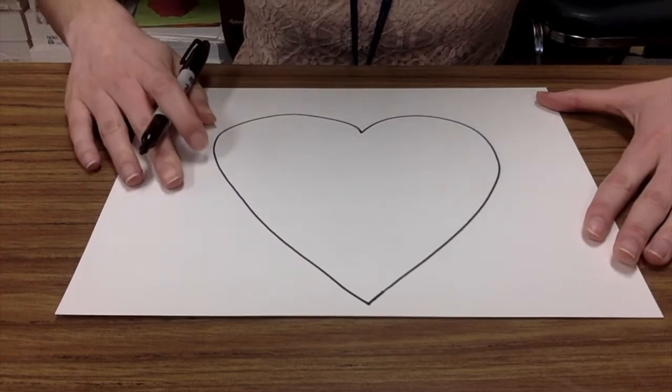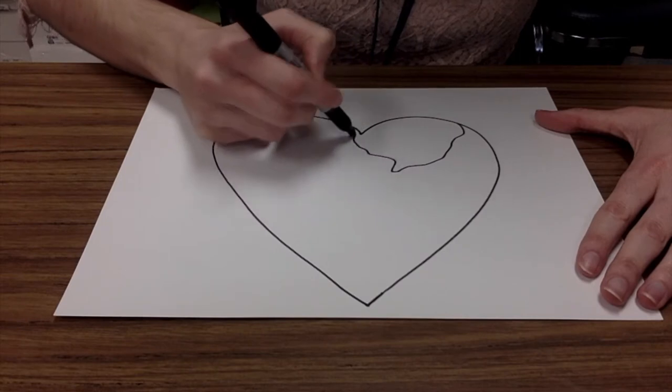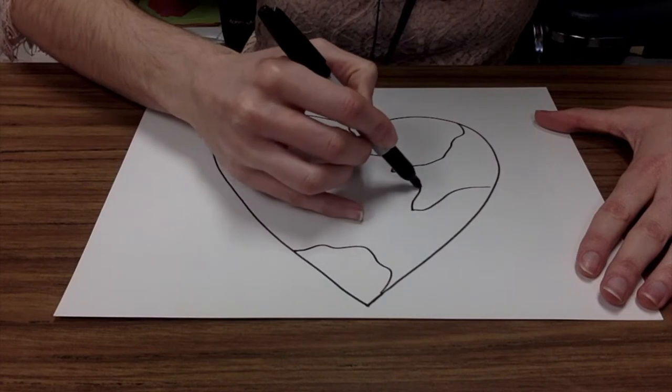Start by drawing a big heart on your paper. Then use a wiggly line to draw some shapes that will be the land. They don't have to look just like the real land on our Earth.